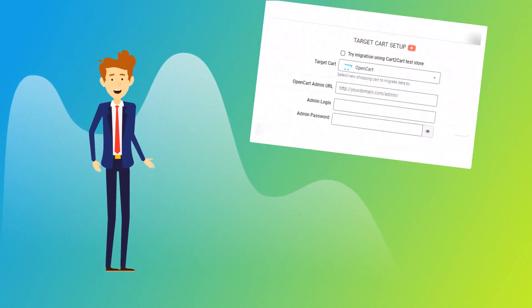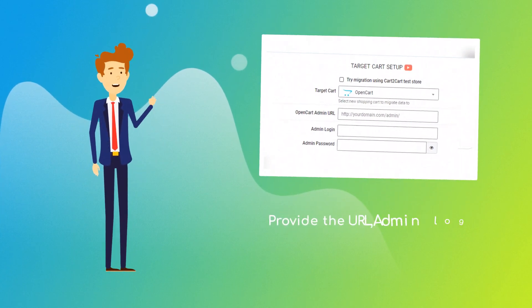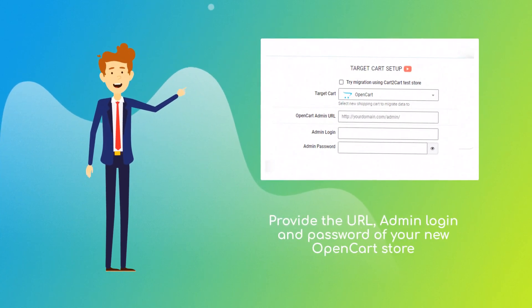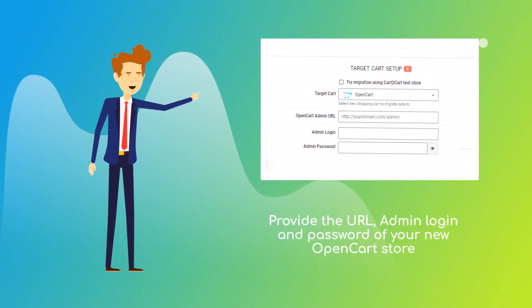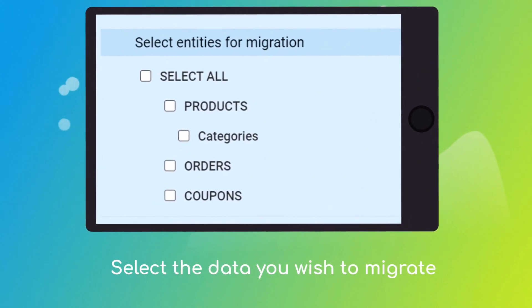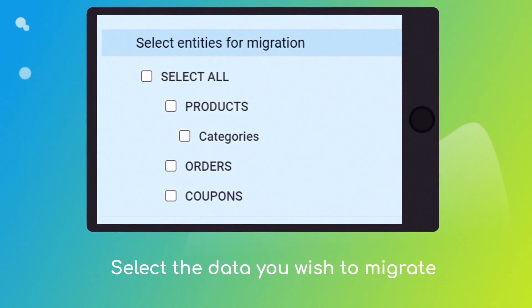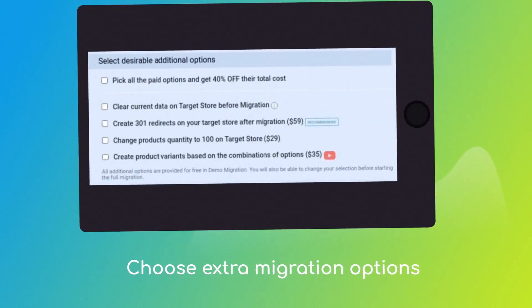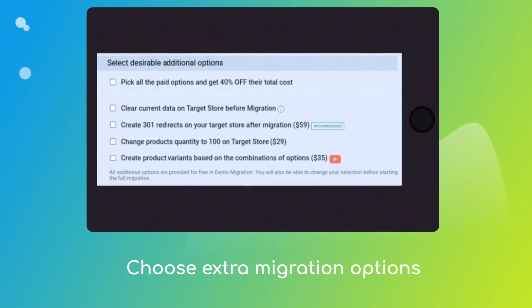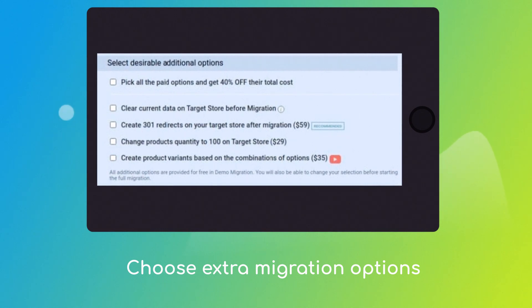Next, provide the URL, admin login and password of your new OpenCart store. Once done, click the Choose Entities button to select the data types you'd like to migrate to OpenCart. And choose additional options like 301 redirects on target store, migrate images from the descriptions, or preserve order IDs, etc.